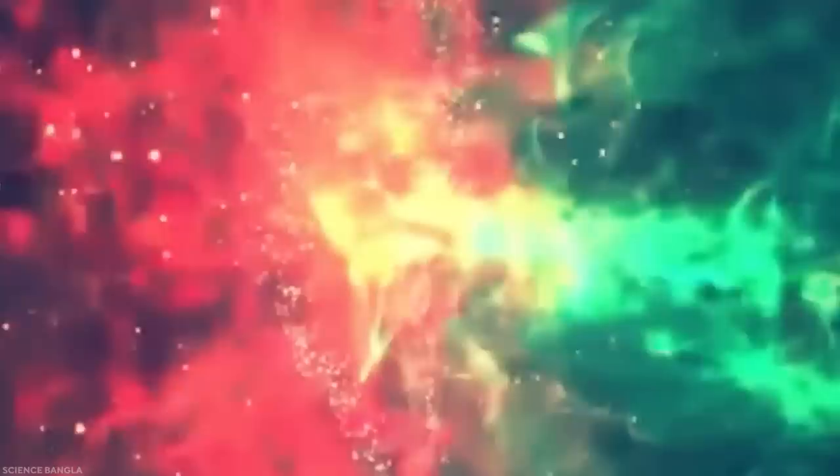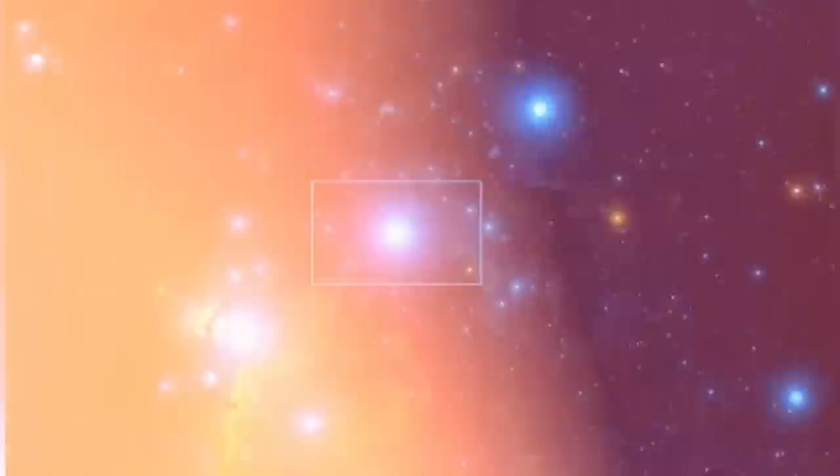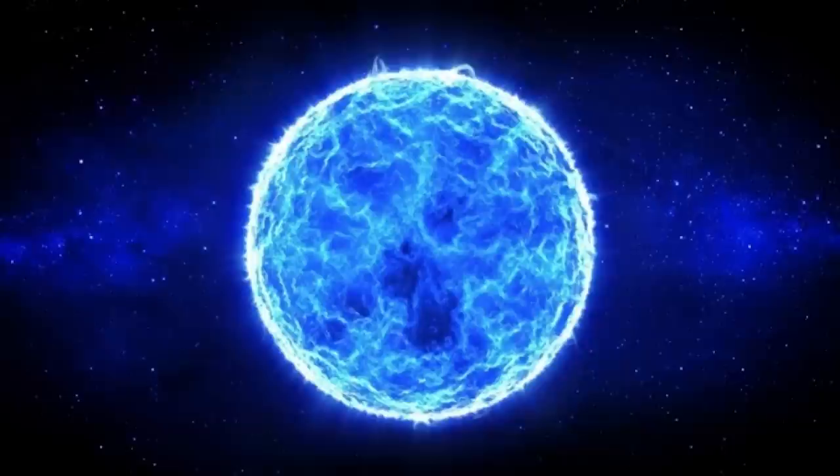Betelgeuse – Alpha Orionis, Bellatrix – Gamma Orionis, Alnitak – Zeta Orionis, Alnilam – Epsilon Orionis, Mintaka – Delta Orionis, Syph – Kappa Orionis, and Rigel – Beta Orionis are the primary stars. The belt of Orion is formed by Alnilam, Mintaka, and Alnitak.